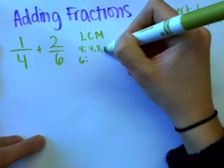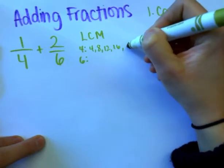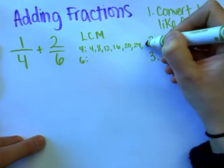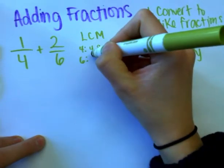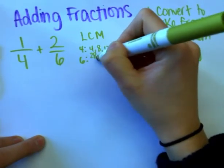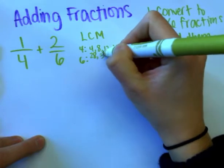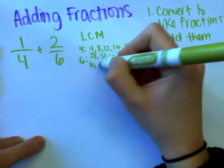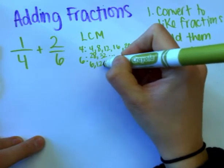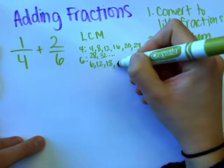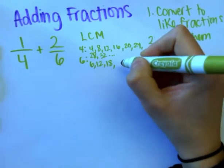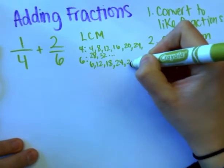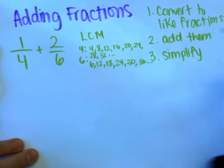Multiples of four: 4, 8, 12, 16, 20, 24, 28, 32 — and I could keep going. Now for six: 6, 12, 18, 24, 30, 36 — I could keep going on.